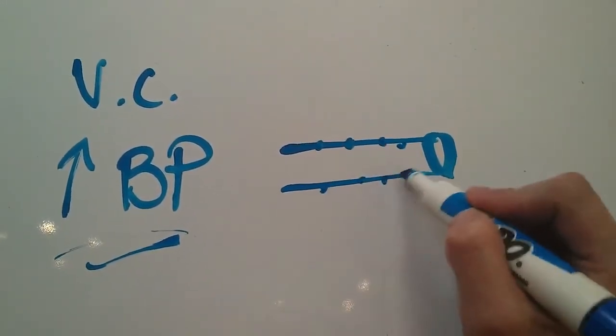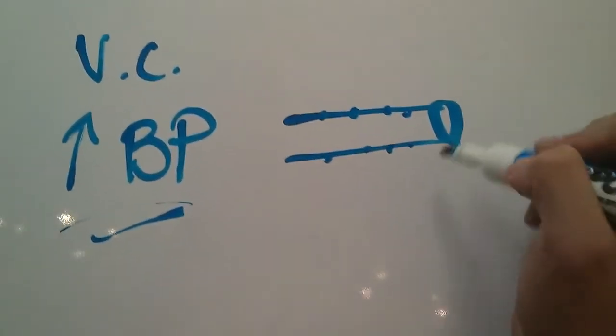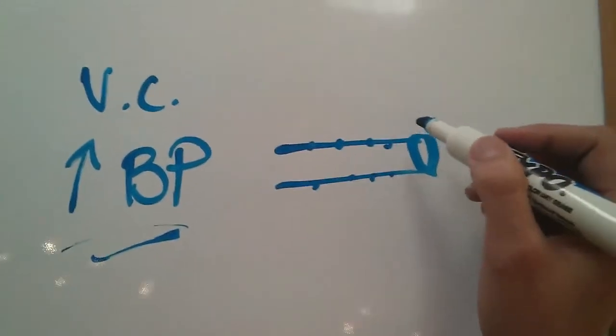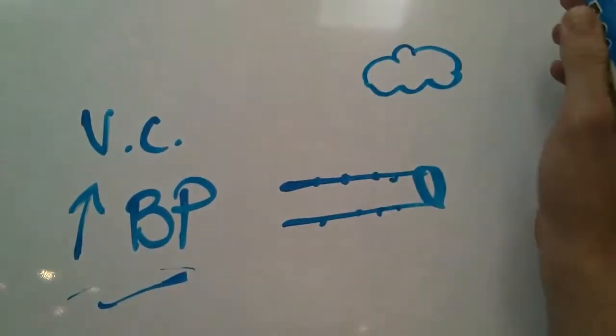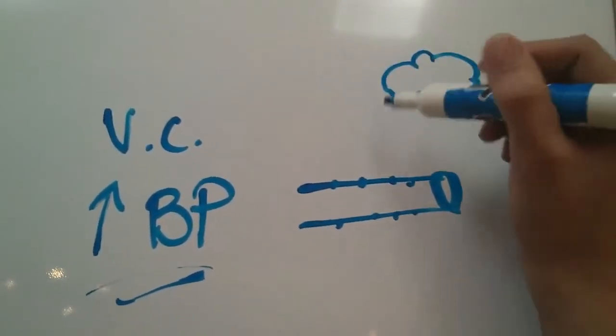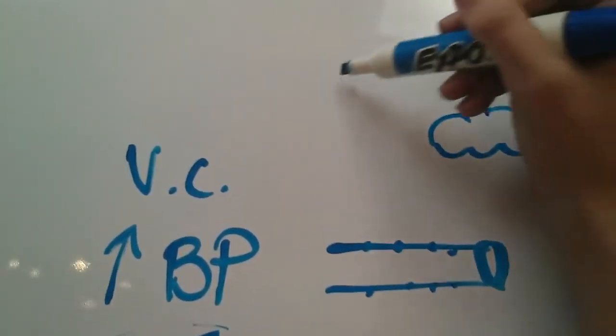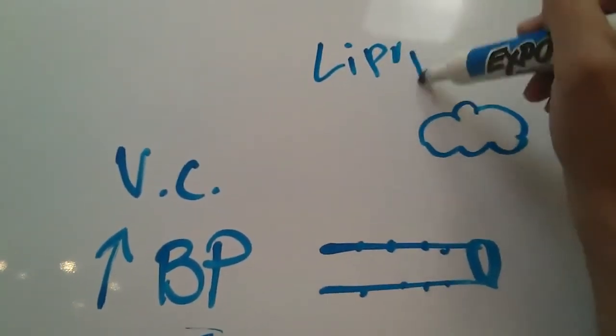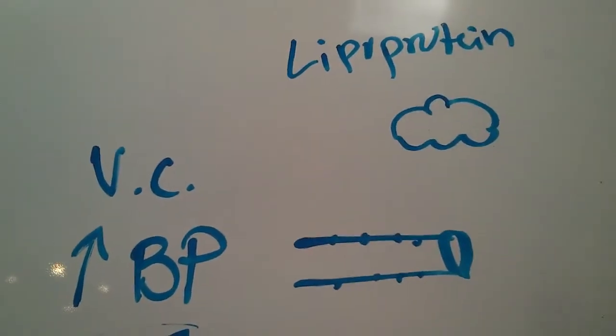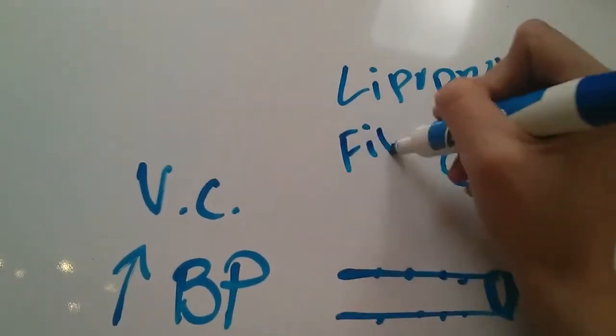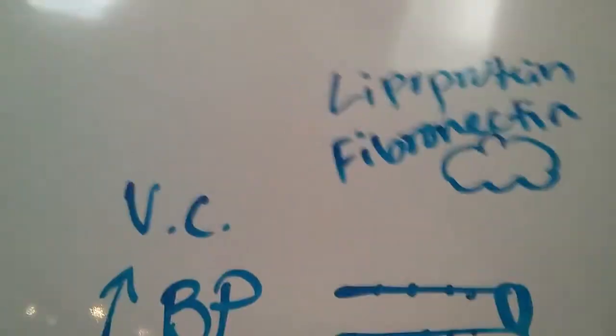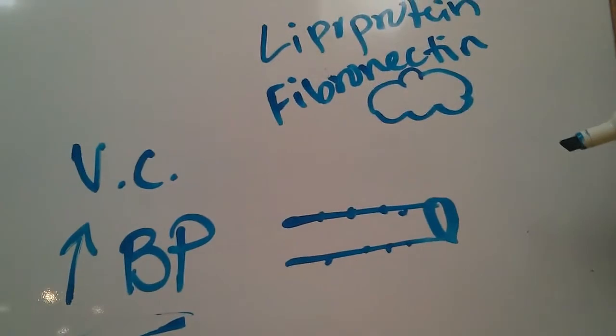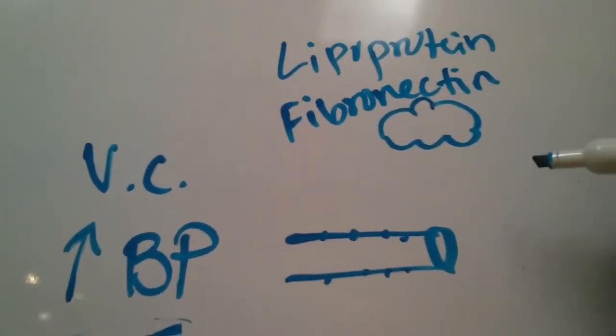Now in response to those holes that are forming in those vessels, your brain is going to start stimulating the production of a lipoprotein called fibronectin.